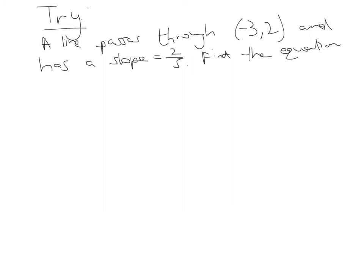Okay guys, so using that example that I just showed, you have a go at this question. So we're told that a line passes through the point minus 3, 2 and has a slope 2 over 5. Find the equation. Have a go at it, pause the video and then play to see how you got on.